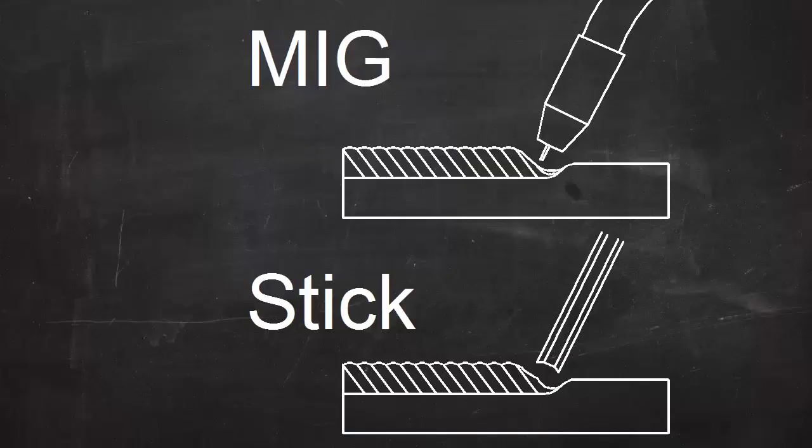In a lot of other welding processes, the electrode melts and becomes filler metal. Those are consumable electrode processes.